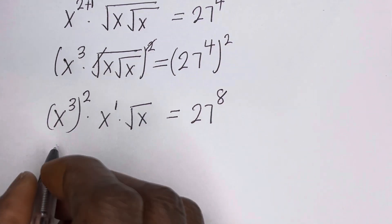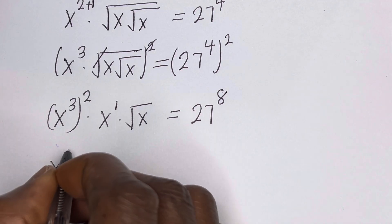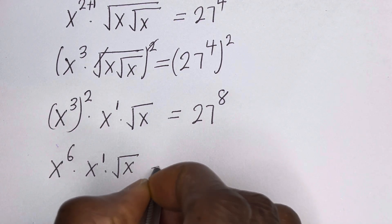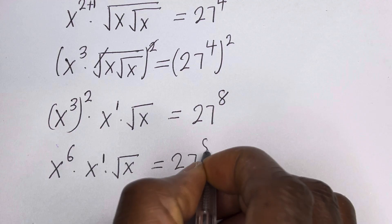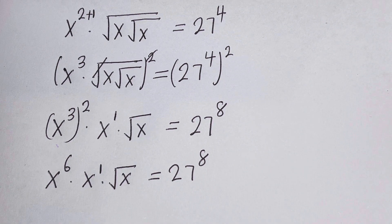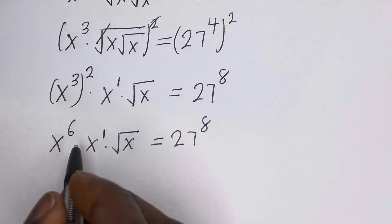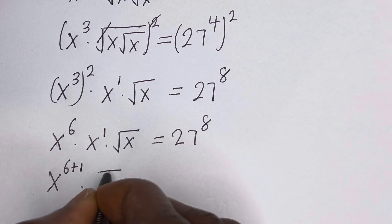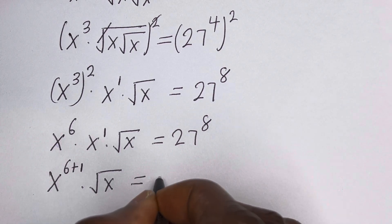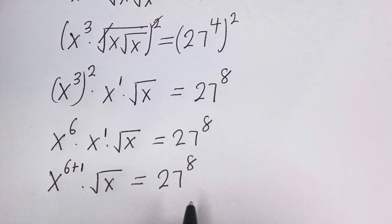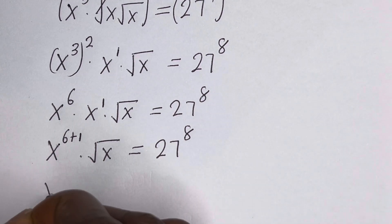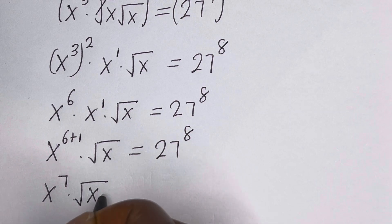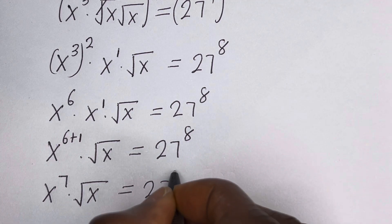Then here we have S raised to power 3 times 2, that is 6, multiplied by S raised to power 1, multiplied by square root of S, is equal to 27 raised to power 8. And this is S raised to power 6, and this is S raised to power 6 plus 1, that is 7, multiplied by square root of S, S raised to power 6 is equal to 27 raised to power 8.